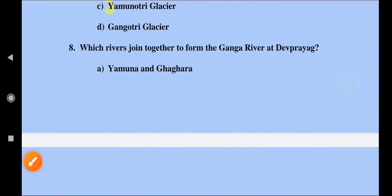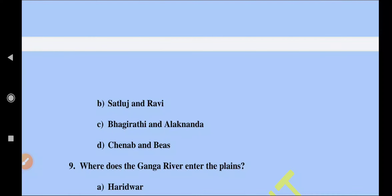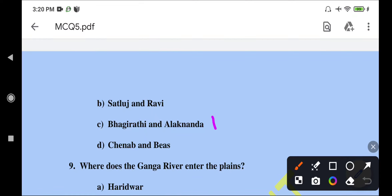Which rivers join together to form the Ganga River at Dev Prayag? Two rivers join each other to form the Ganga at Dev Prayag. Those two rivers are Bhagirathi and Alaknanda. Dev Prayag is in the Tehri Garhwal District of Uttarakhand. When Bhagirathi and Alaknanda meet at Dev Prayag, the Ganga is formed. Option C is correct.